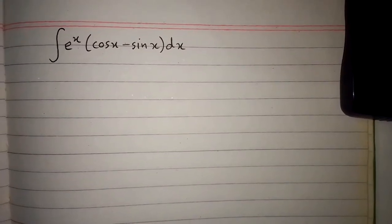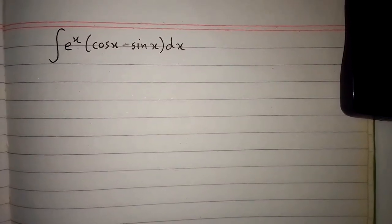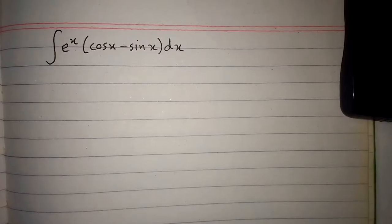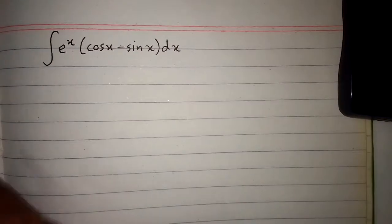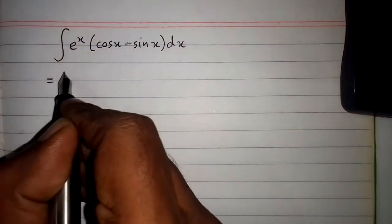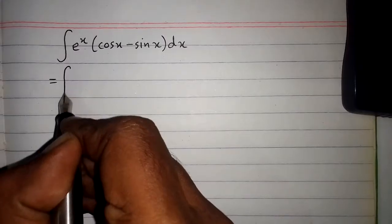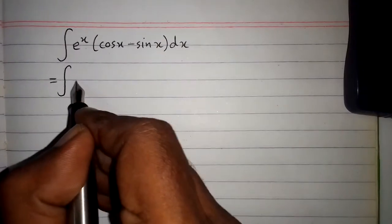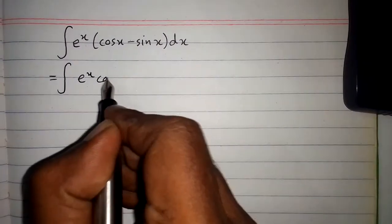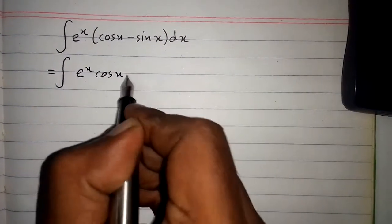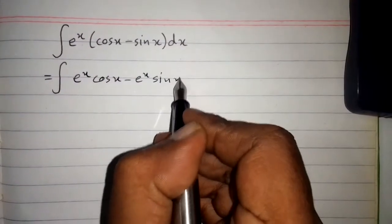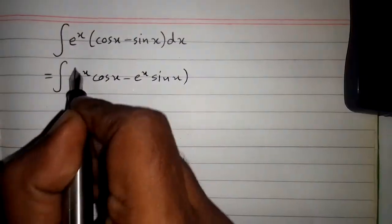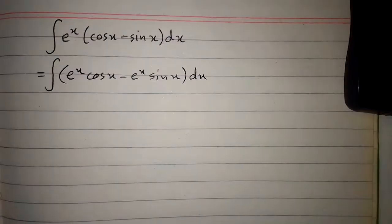In this video we are going to integrate the function which is the integral of e to the power x times (cos x minus sin x). First of all we will expand this bracket, so we have the integral of e to the power x cos x minus e to the power x sin x, dx.